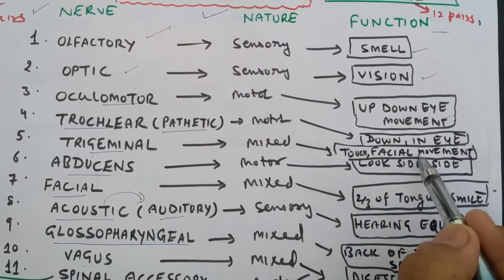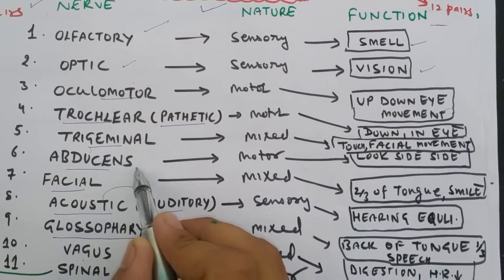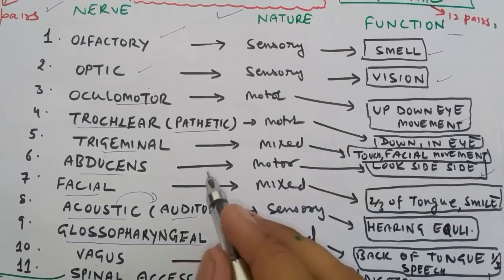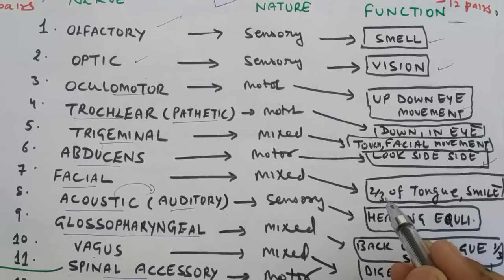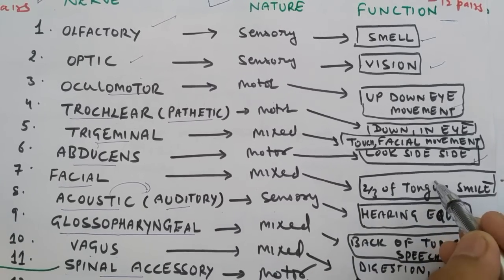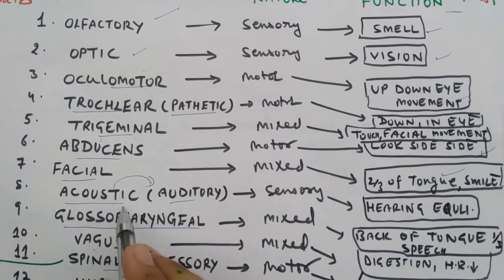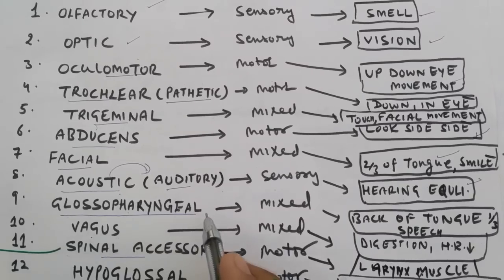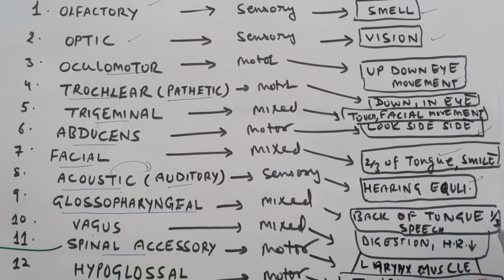Trochlear or pathetic controls downward and inward movement of the eyeball. Trigeminal controls touch and facial movement. Abducens allows you to look side by side, that is eye movement. Facial controls two-thirds of the tongue and smile.